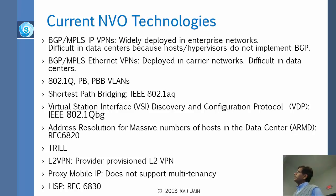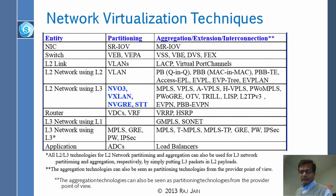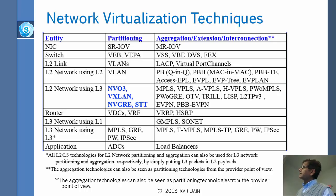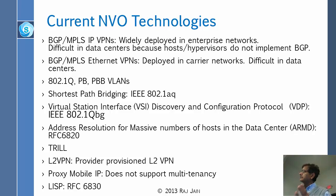BGP MPLS cannot be used in data centers because the hosts do not implement BGP. Hosts inside companies don't know about BGP, so it is difficult to use in data centers. BGP MPLS is deployed in carrier networks, but again, BGP is not present in data centers. 802.1Q, PB, PBB — these VLANs are used. Shortest path bridging is being used, and QBG is coming in.